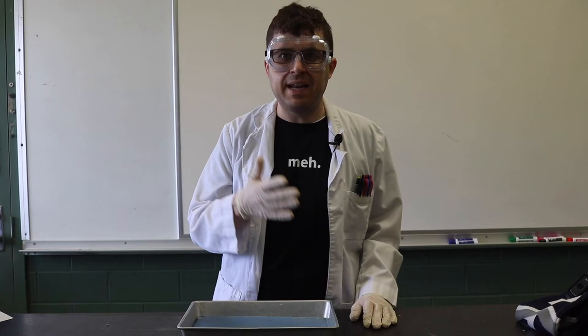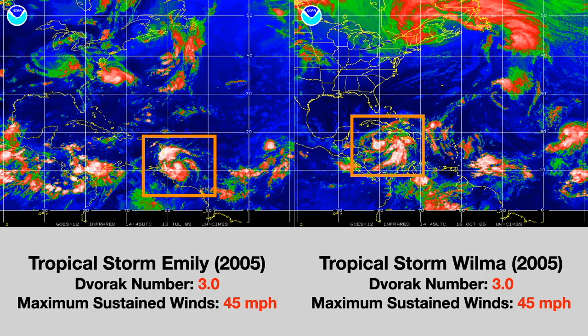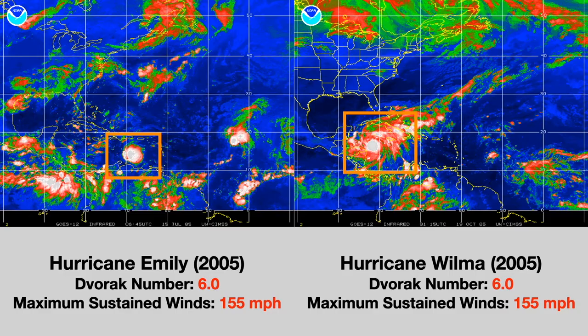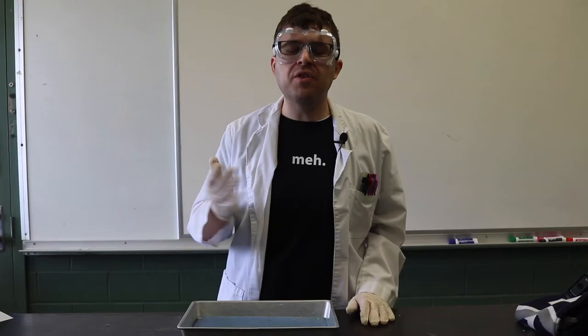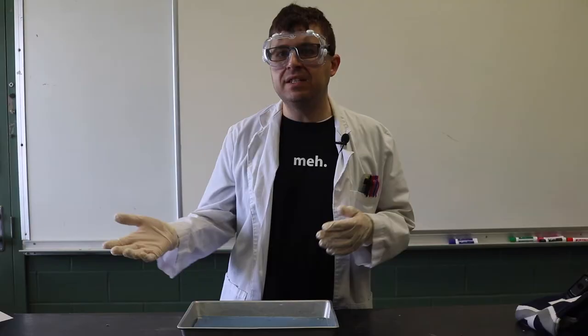Since tropical cyclones and hurricanes have similar characteristics at each stage of development, if a new storm has the characteristics of a storm observed in the past, it should have the same wind speed and pressure gradients. While this was initially done by hand, the Dvorak technique today is completely automated by computers that can look more deeply into the conditions and make comparisons that might not be noticed by scientists looking by hand.